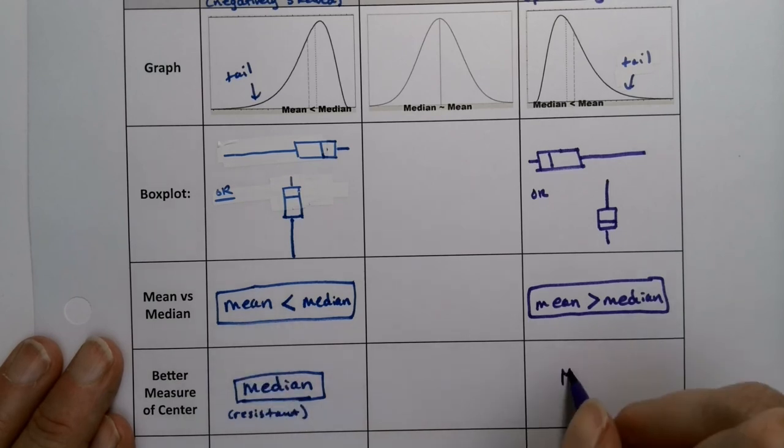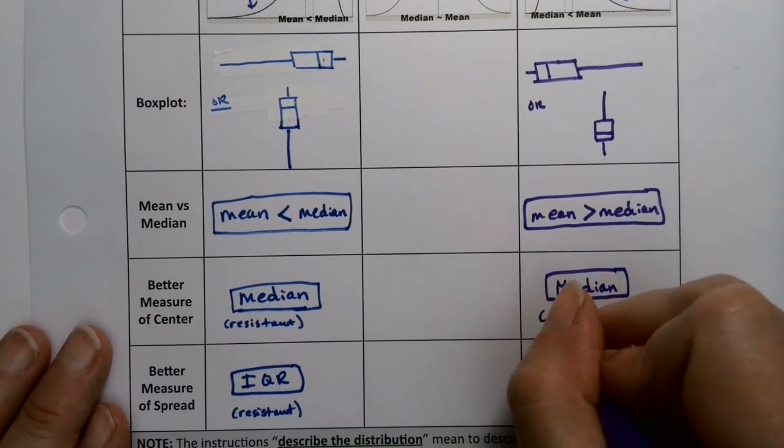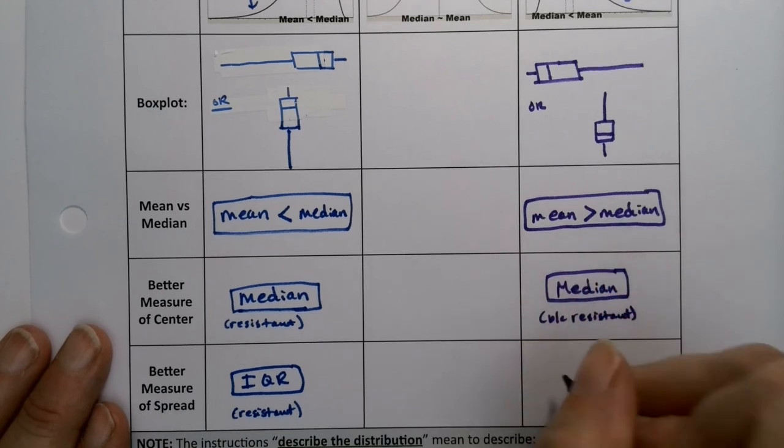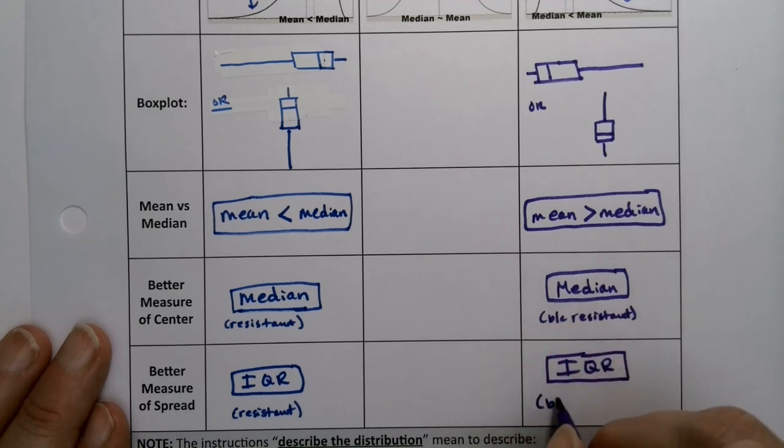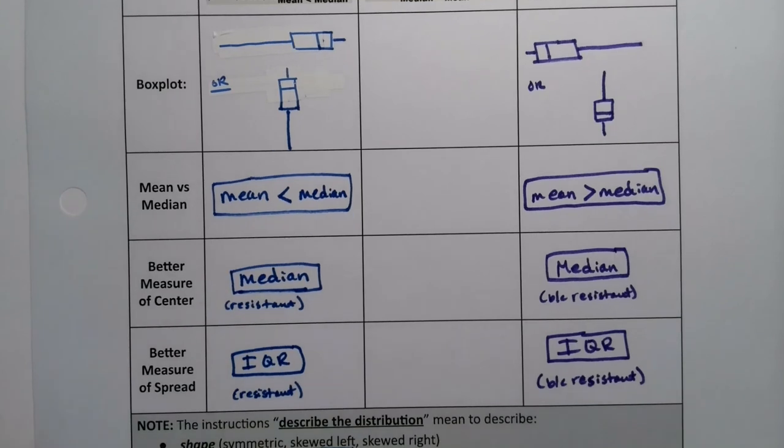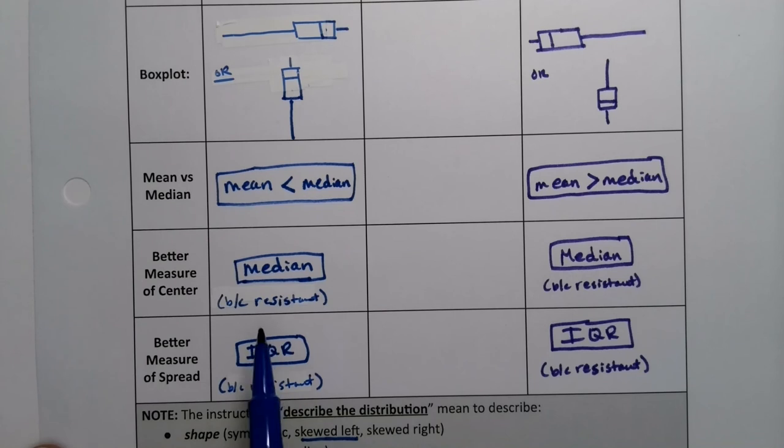So again, we would use the median as our measure of center. It's fairer because it's resistant. And IQR, which is Q3 minus Q1. It's not a difficult calculation, but it's resistant to outliers and skewing. I just rewrote those ones over on the left so that way you know why you're doing it.